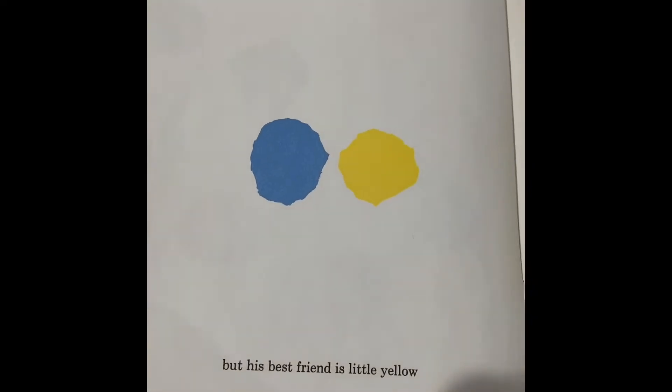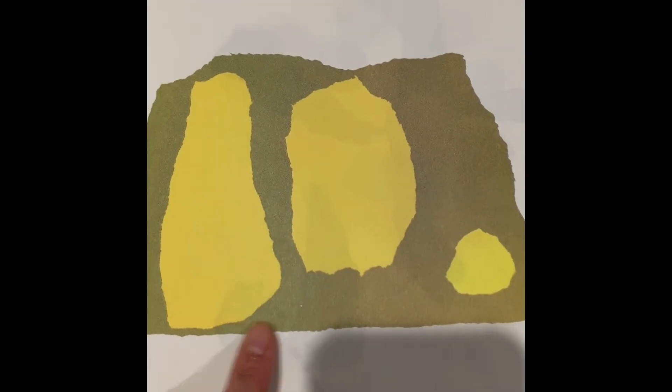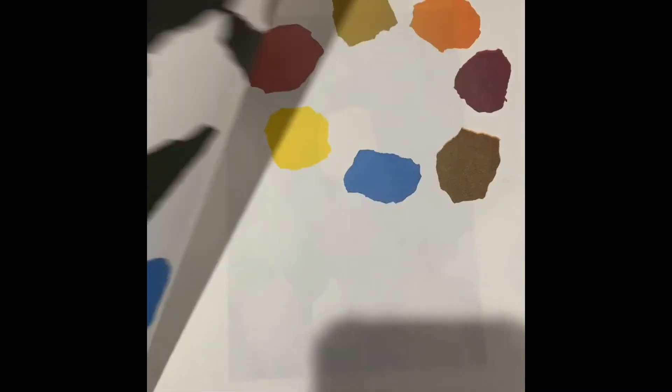But his best friend is Little Yellow. I see blue and I see yellow. Who lives across the street? Yellow lives with his family across the street.